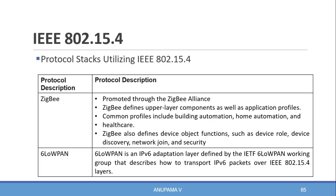6LoWPAN is an IPv6 adaptation layer defined by the IETF 6LoWPAN working group. It describes how to transport IPv6 packets over IEEE 802.15.4 layers, above the physical and link layer. The IETF 6LoWPAN working group has defined the IPv6 packet format for this purpose.